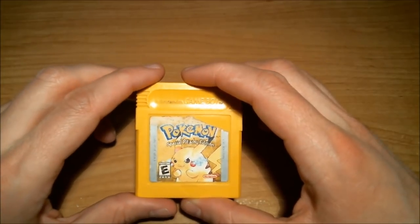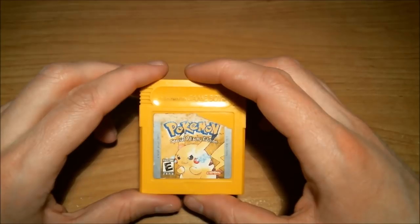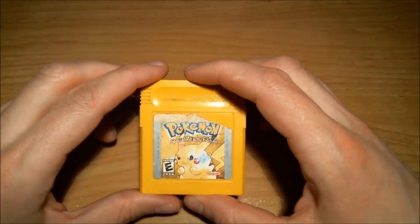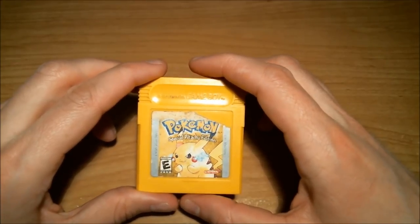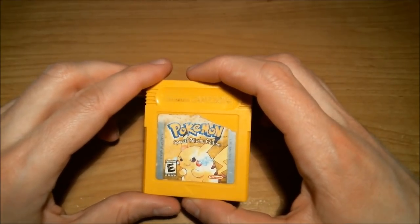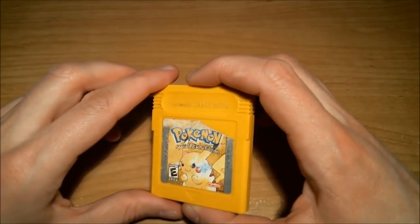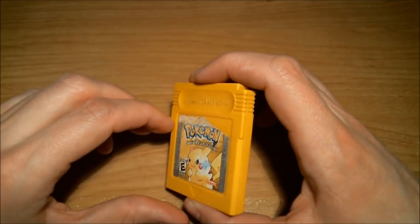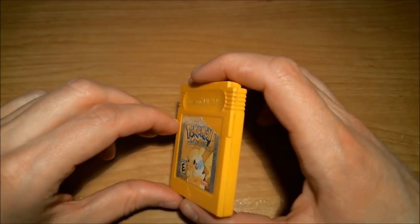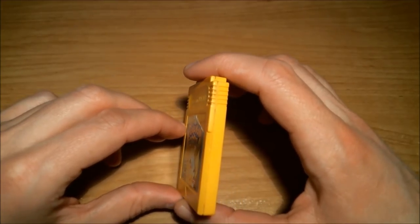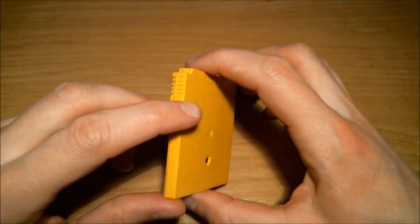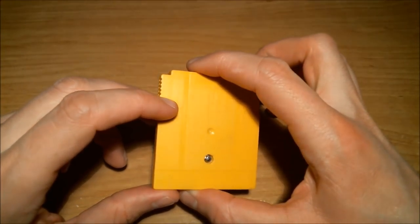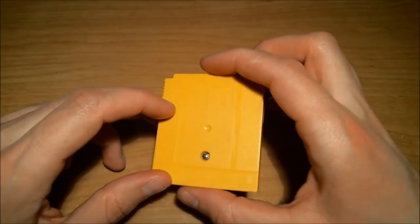Pokemon Yellow was released following Pokemon Blue and Red. And instead of getting to pick from one of the original starters, Bulbasaur, Charmander or Squirtle, you start off with a Pikachu.